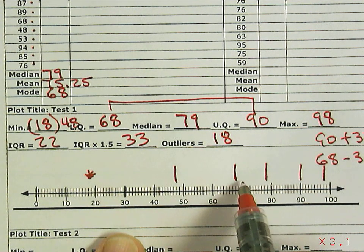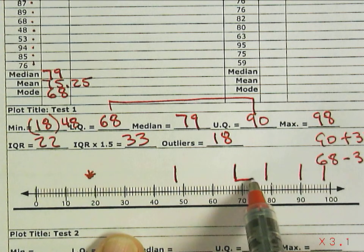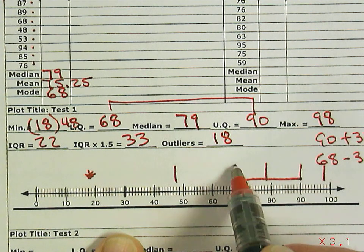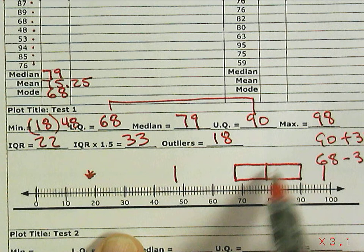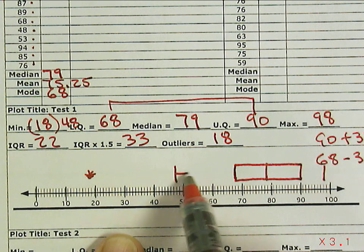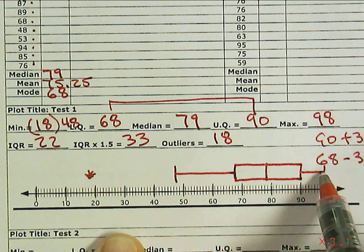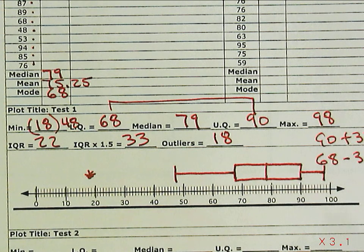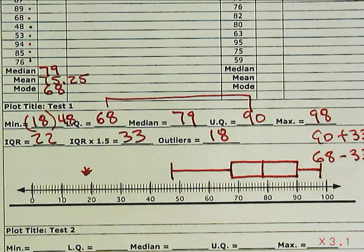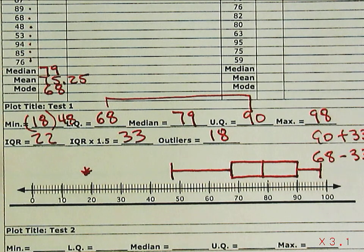Remember, with the box and whisker, you take the three in the center, the lower quartile, the median, and the upper quartile, and make a box with those. That's the middle 50% of the data. Attach it to the maximum and minimum with a whisker. And there you have a box and whisker plot for the data for test 1.